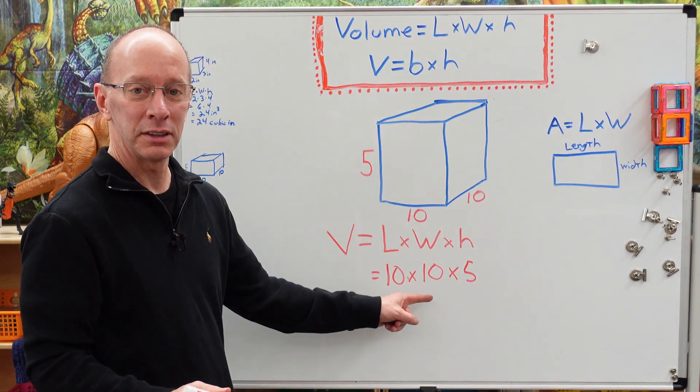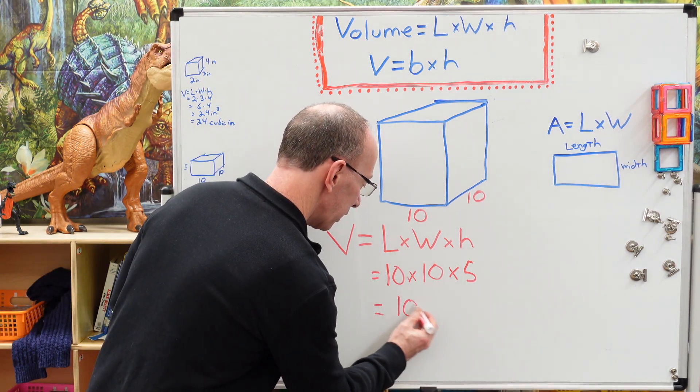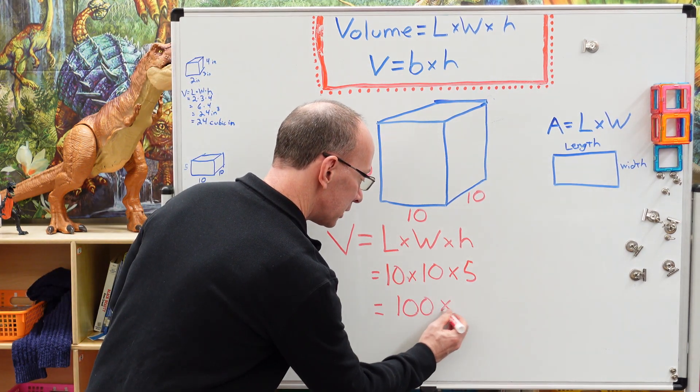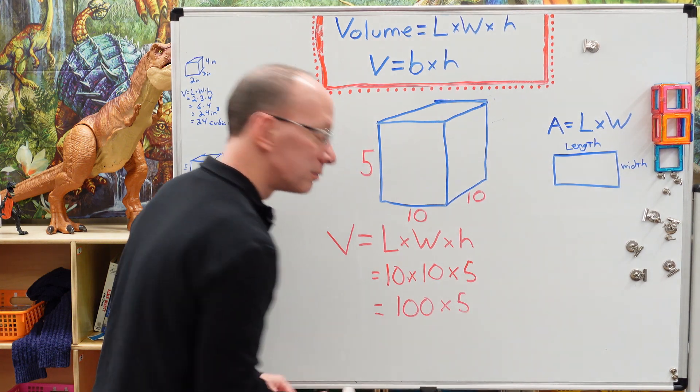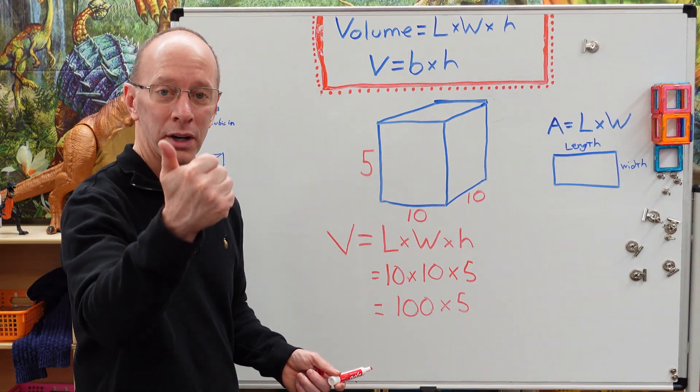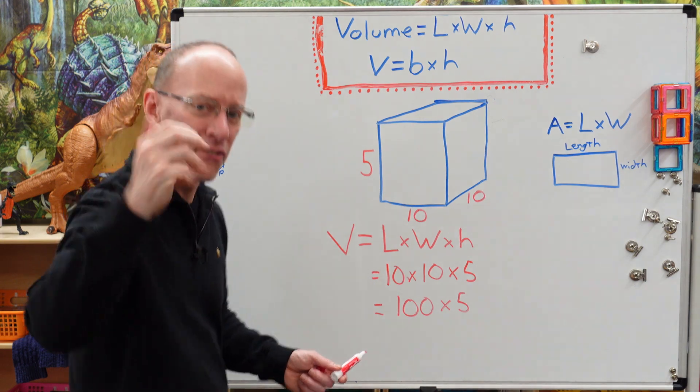10 times 10, 100. So we'll put 100 here times 5. You know what 100 times 5 is? We got 100, 200, 300, 400, 500.